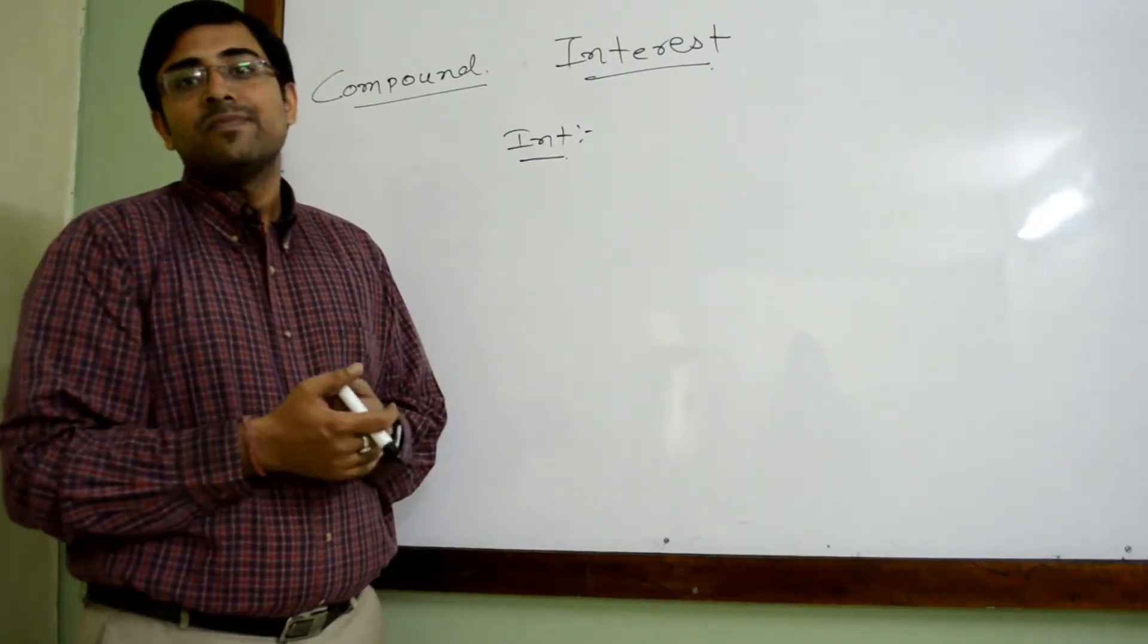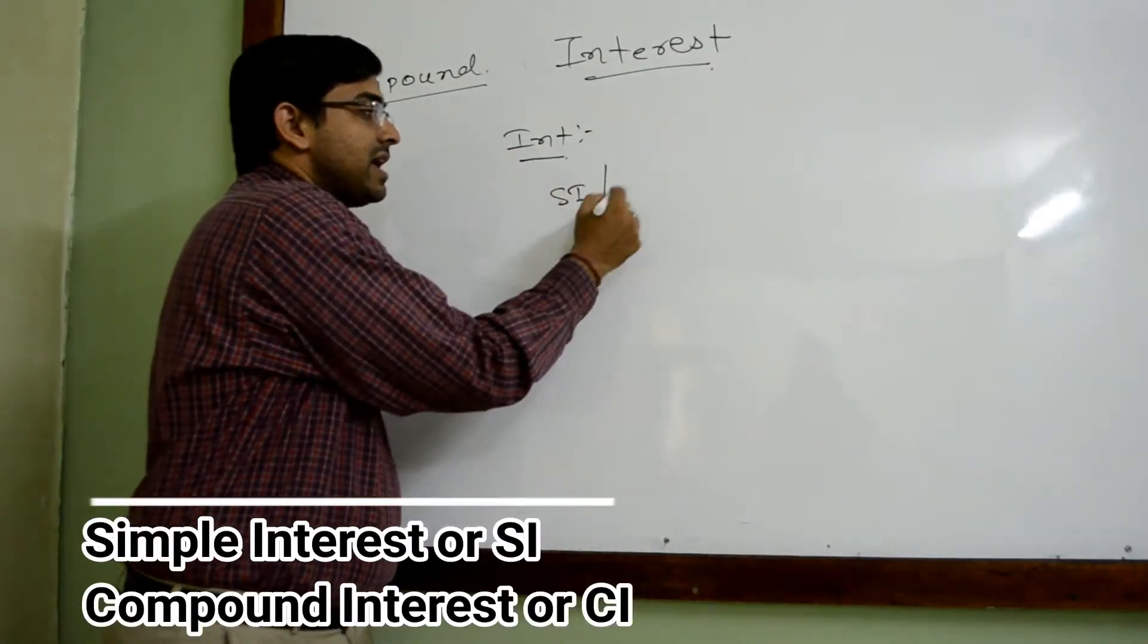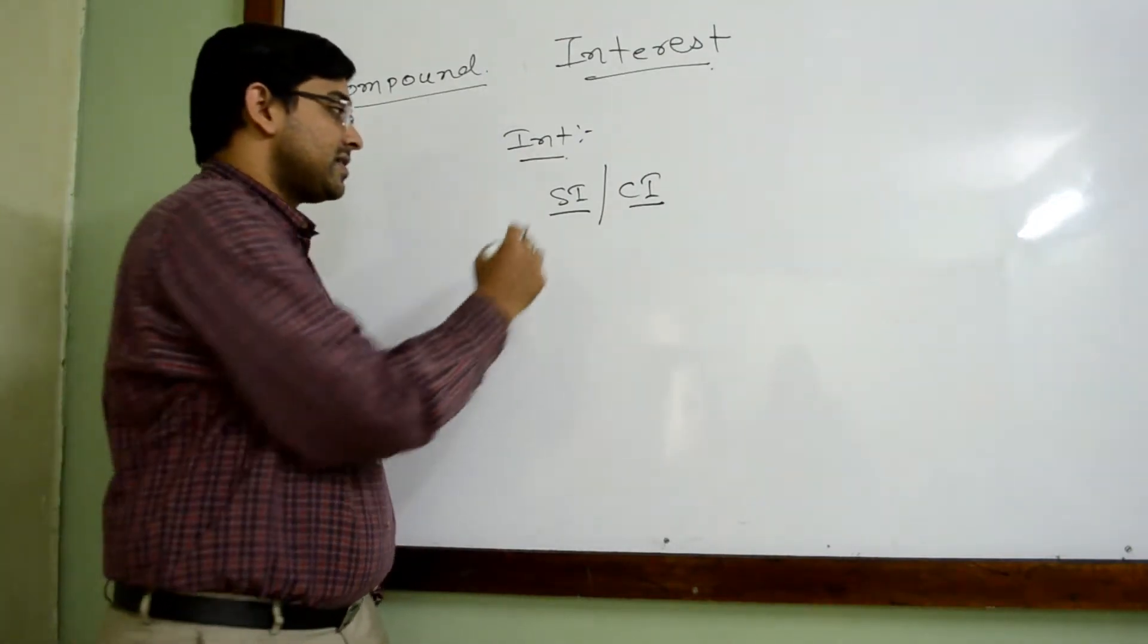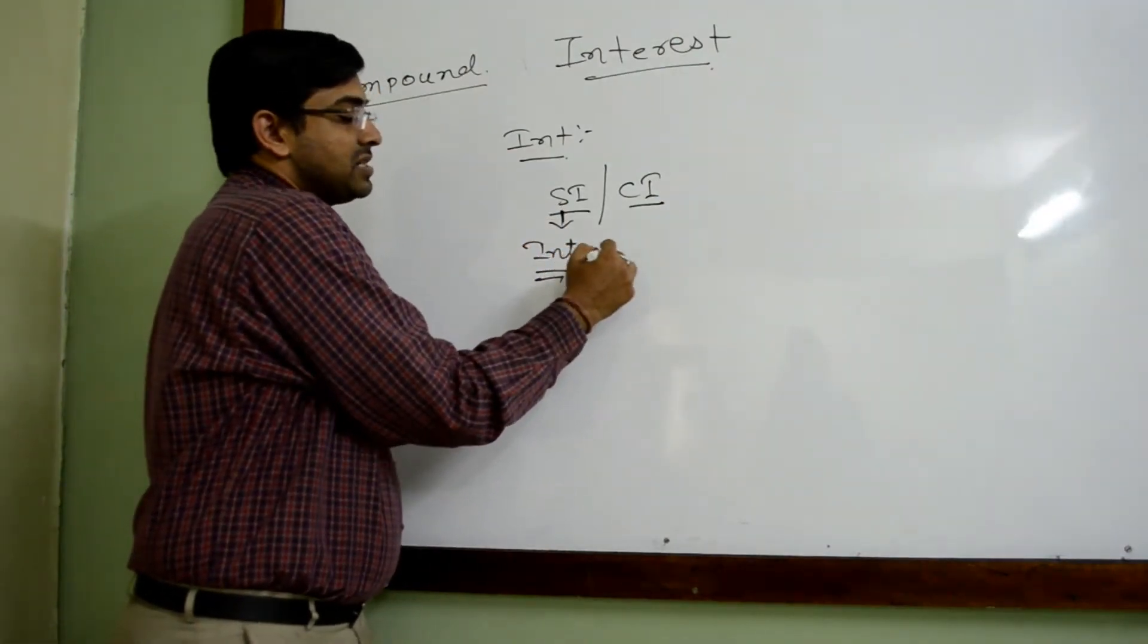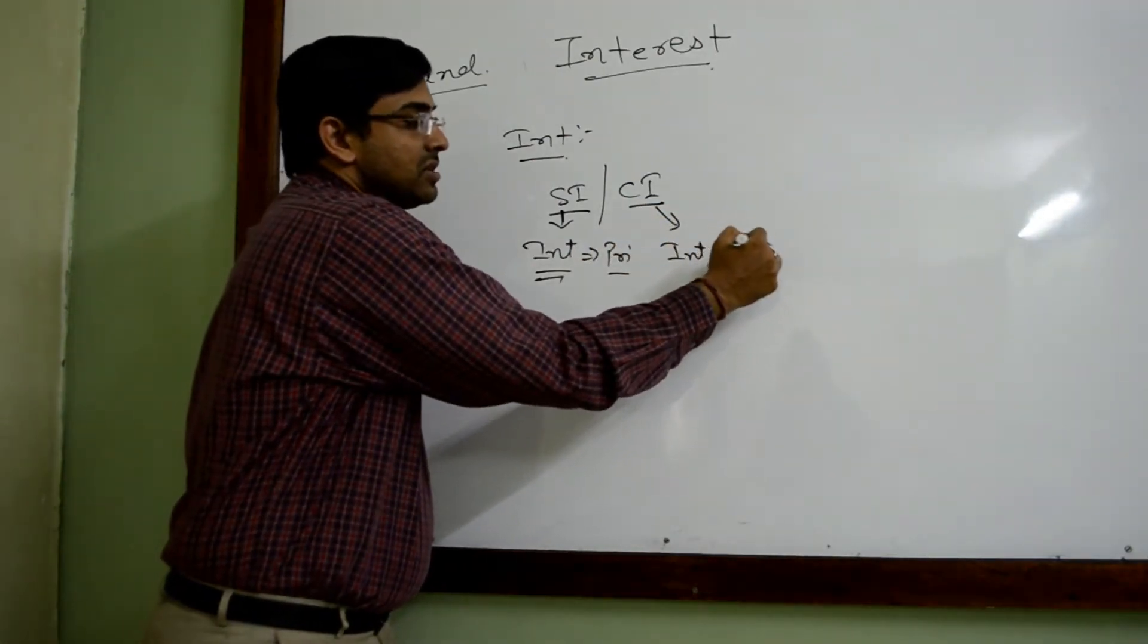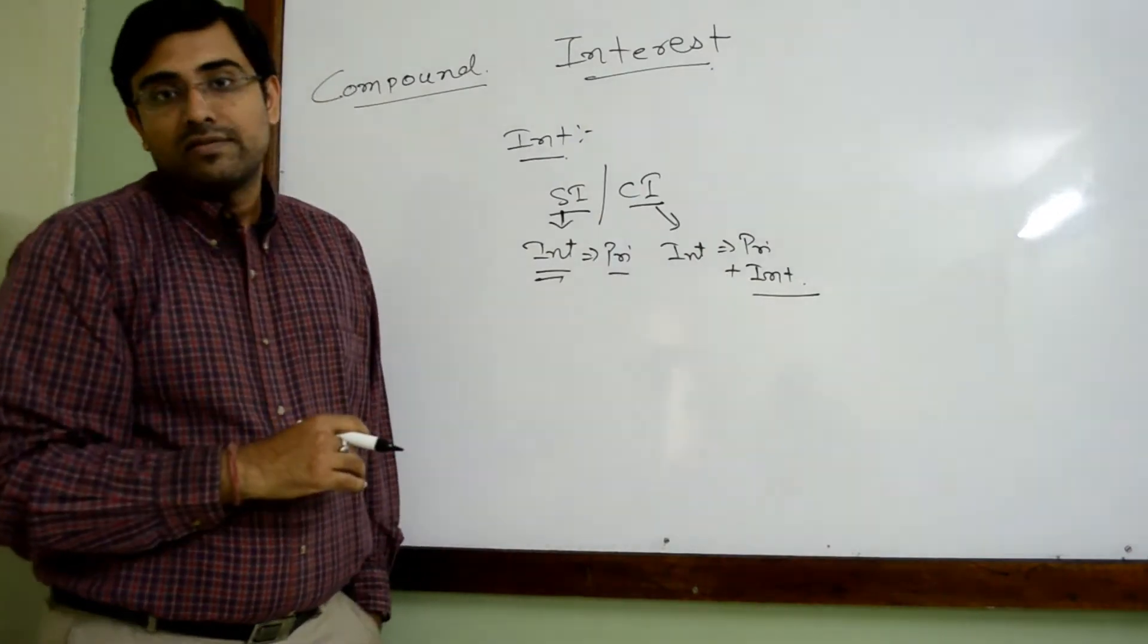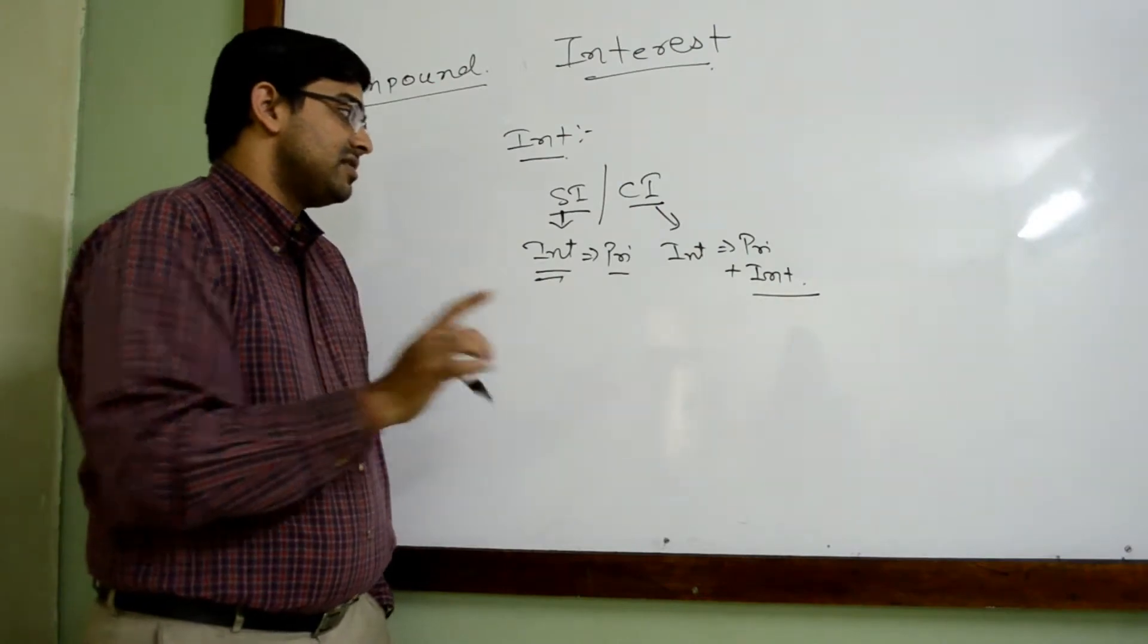Now there are two types of interest: one is simple interest and the other one is compound interest. Basically there are two differences between simple interest and compound interest. In simple interest, interest is paid only on the principal. In compound interest, interest is paid on principal plus it is also paid on the previous amounts of interest which is earned or received. So the basic difference to identify is simple interest...